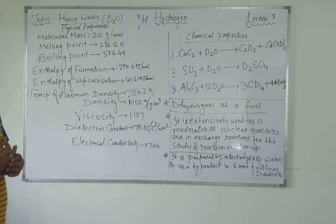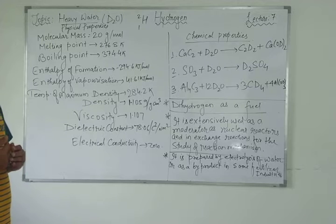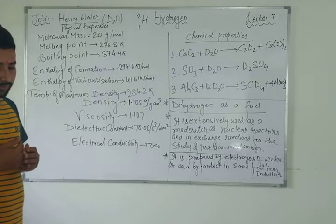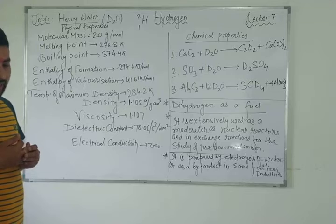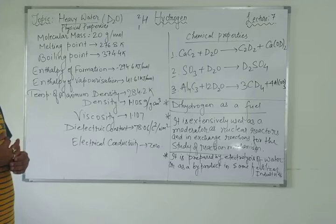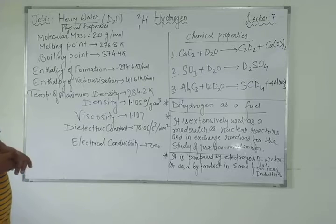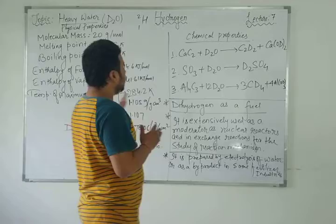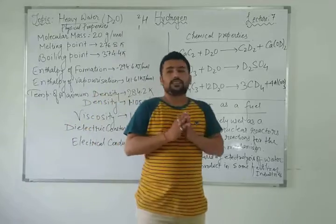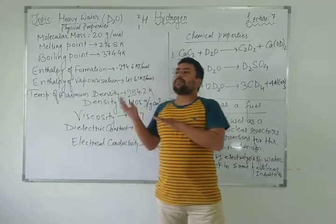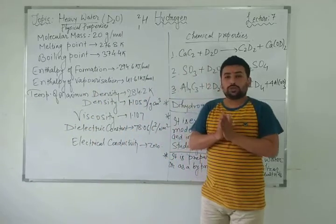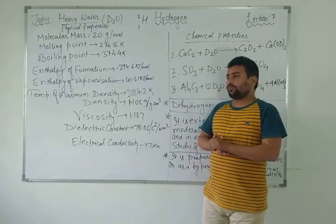Dihydrogen can be converted into liquid state by cooling, and stored in tanks. The tanks should be made of metal alloys like nickel, titanium hydrides, or magnesium hydrides. Dihydrogen can also be used as a fuel in these forms.